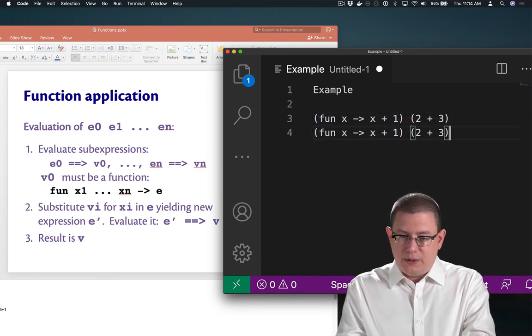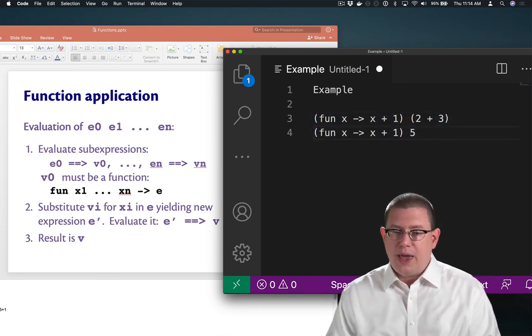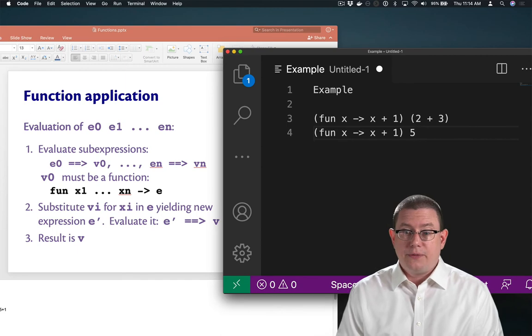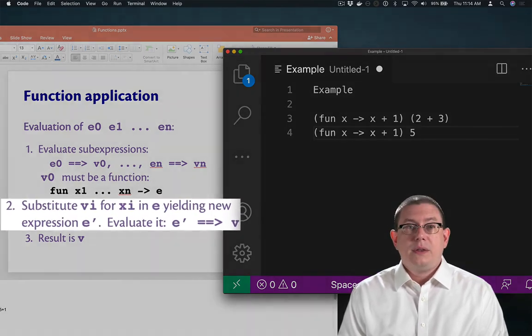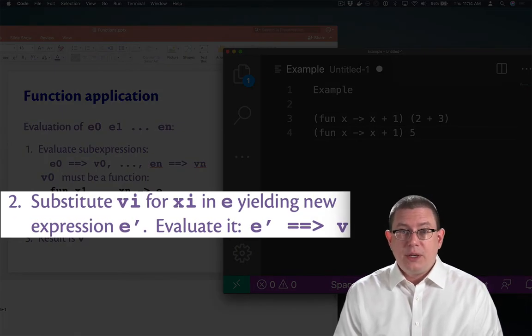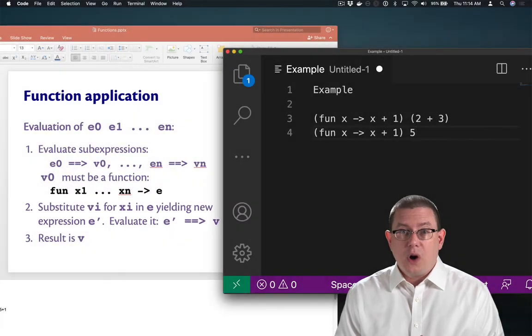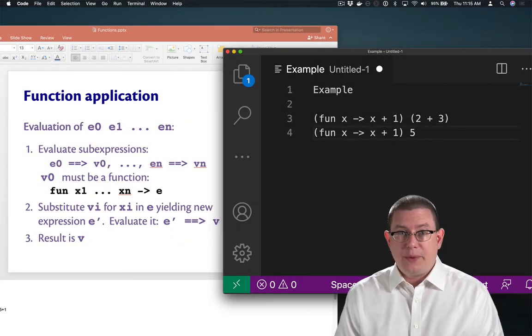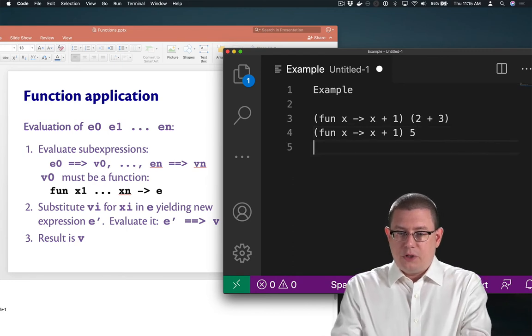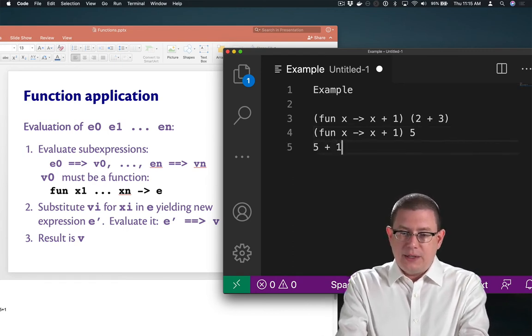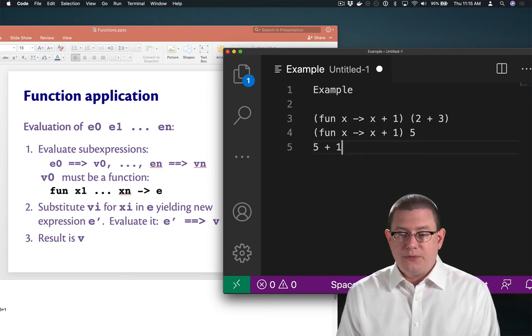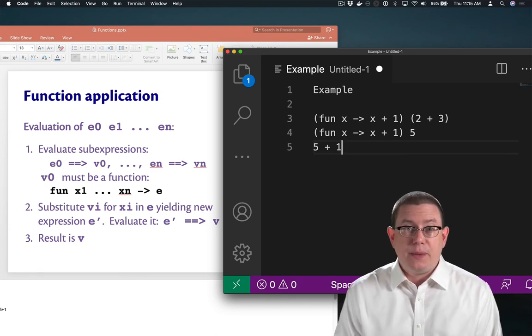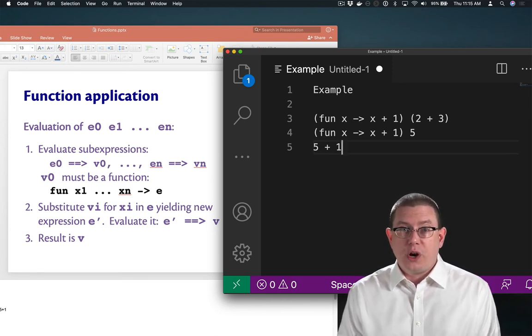So what do we end up with next? We're trying to apply fun x arrow x plus 1 to 5. Next step in function application: substitute the argument values for the names of the parameters. So I want to substitute 5 for x inside the body of the anonymous function. That gives me 5 plus 1. That is my expression e prime.